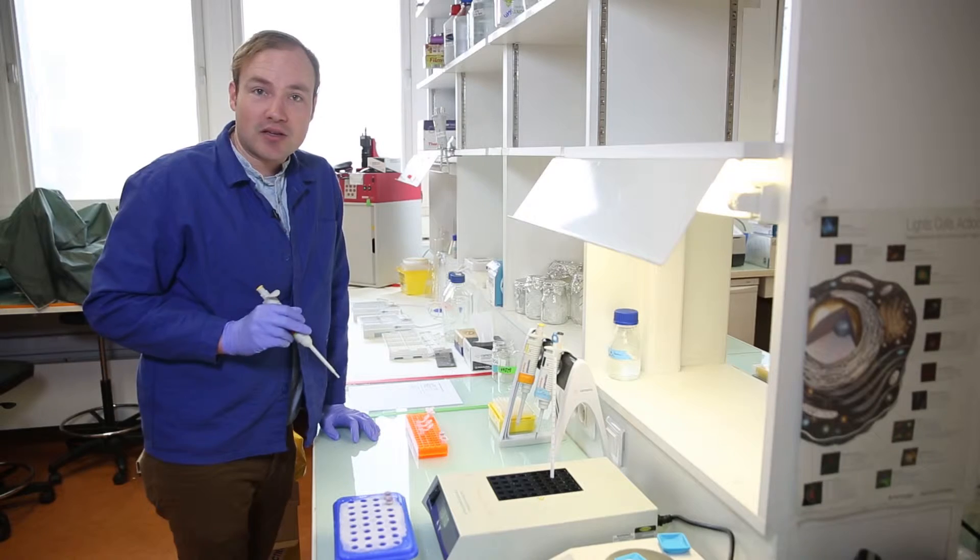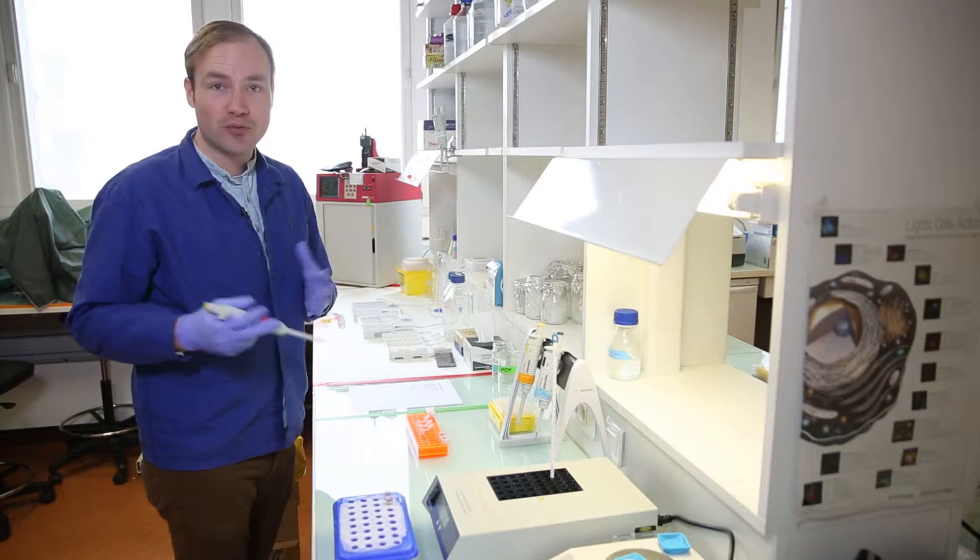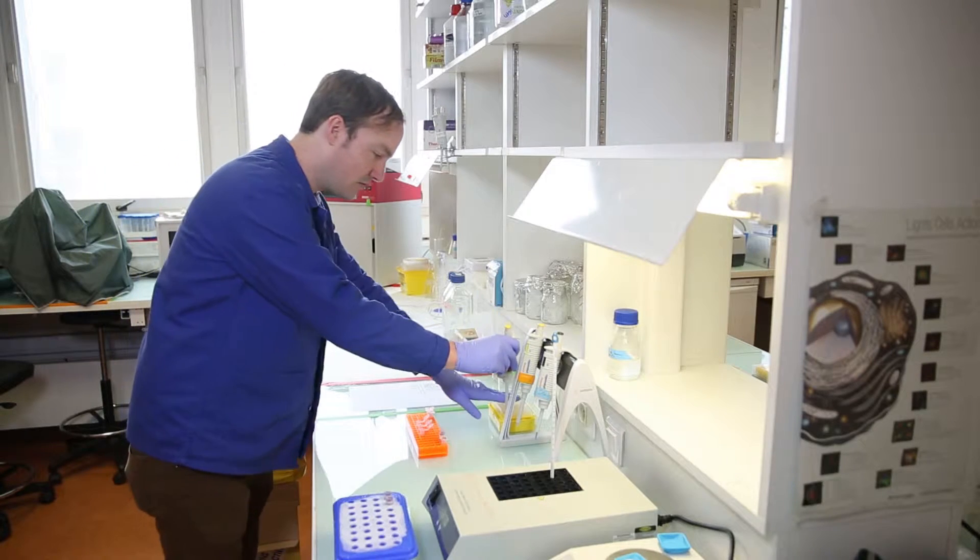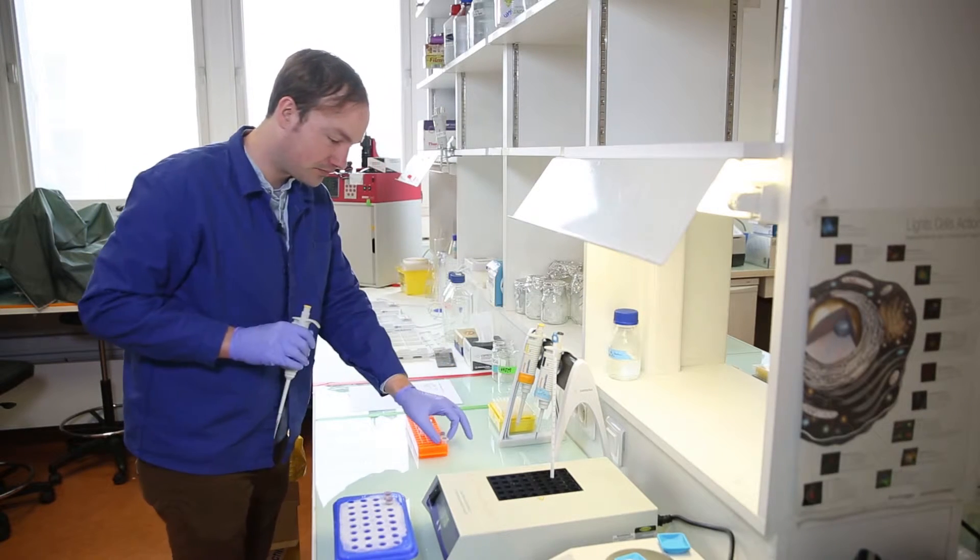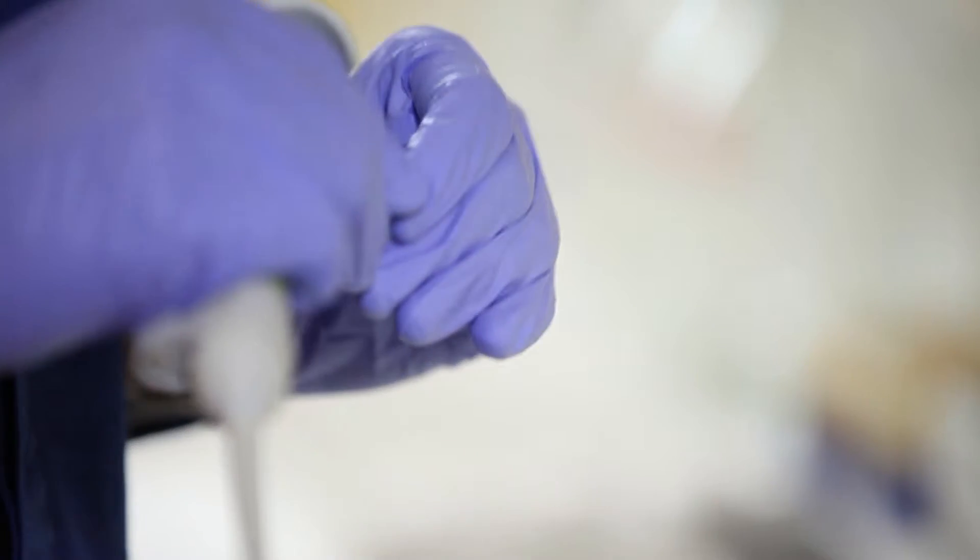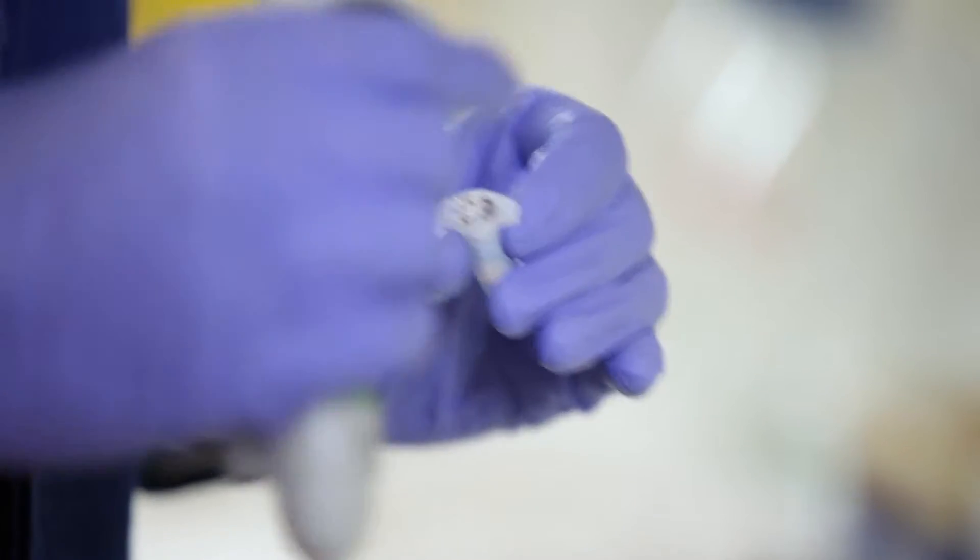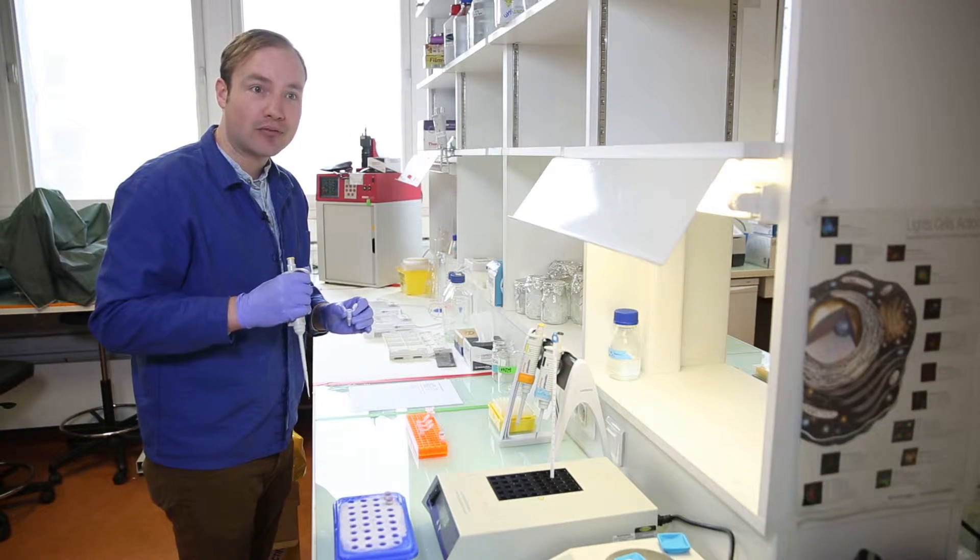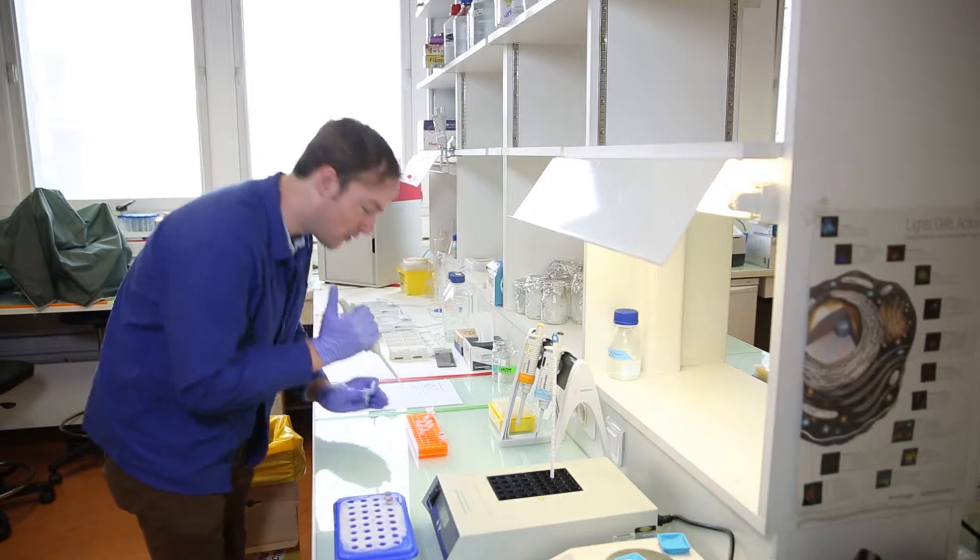Next, the plasmid. So for this reaction, we'll be using PSB1C3, which is a standard biobrick plasmid. You can get the sequence from the biobrick registry, or we'll make it available on the site. The plasmid that I'm using today has a concentration of 160 nanograms per microliter. I'll be adding 10 microliters of plasmid, and that gives me about one and a half micrograms of plasmid total.